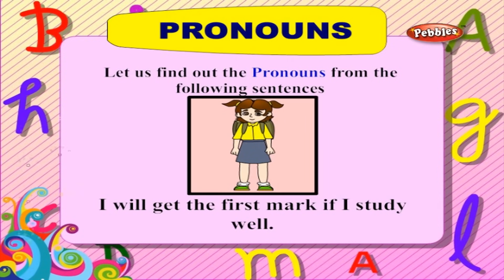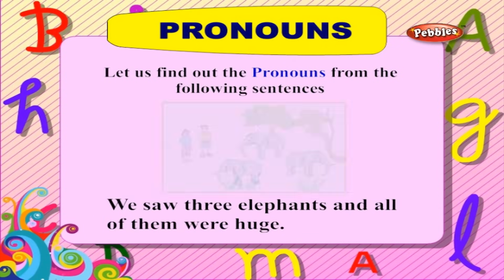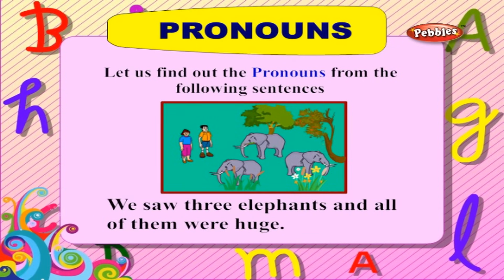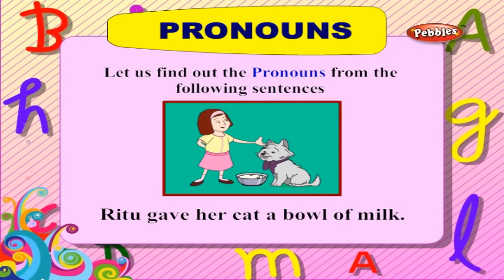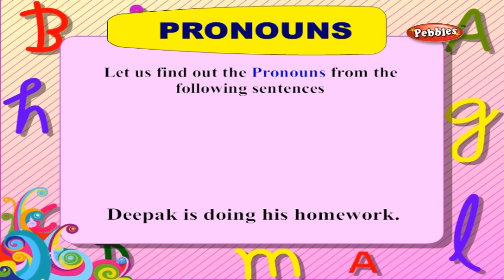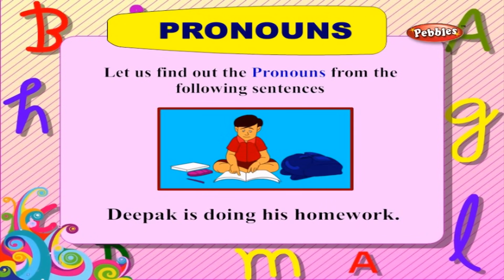'I will get the first mark if I study well' — the pronoun is 'I', found in two places. 'We saw three elephants and all of them were huge' — the pronouns are 'we' and 'them'. 'Ritu gave her cat a bowl of milk' — the pronoun is 'her'. 'Deepak is doing his homework' — the pronoun is 'his'.